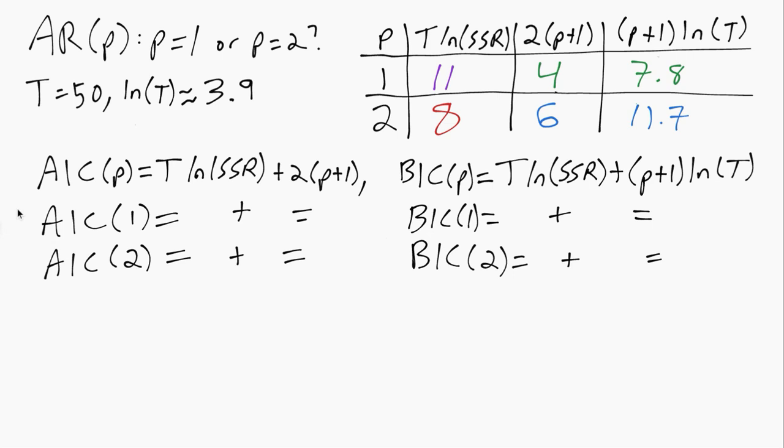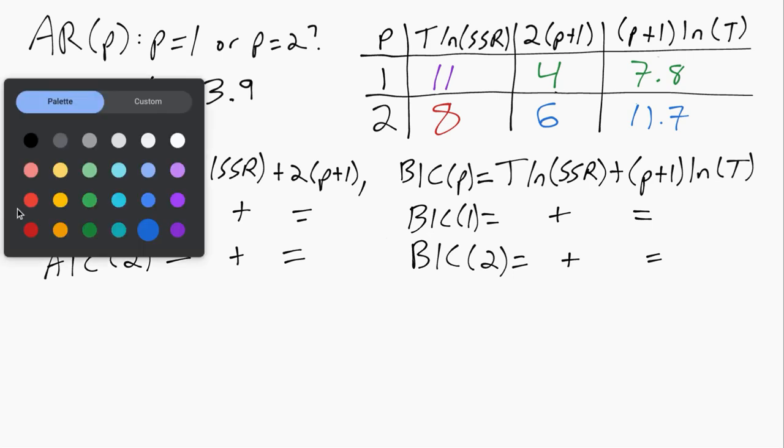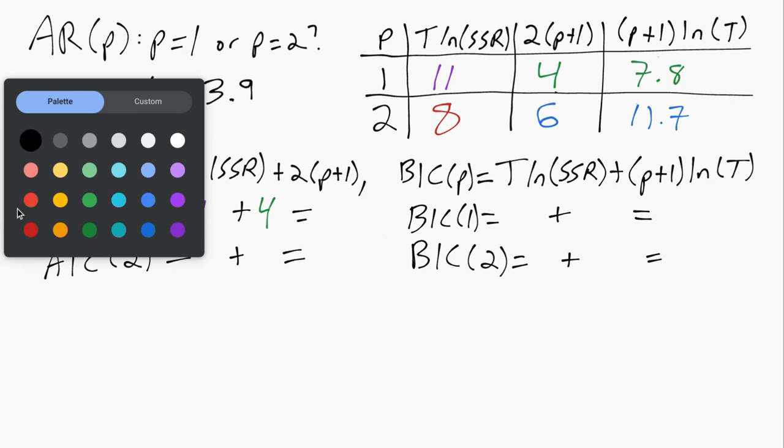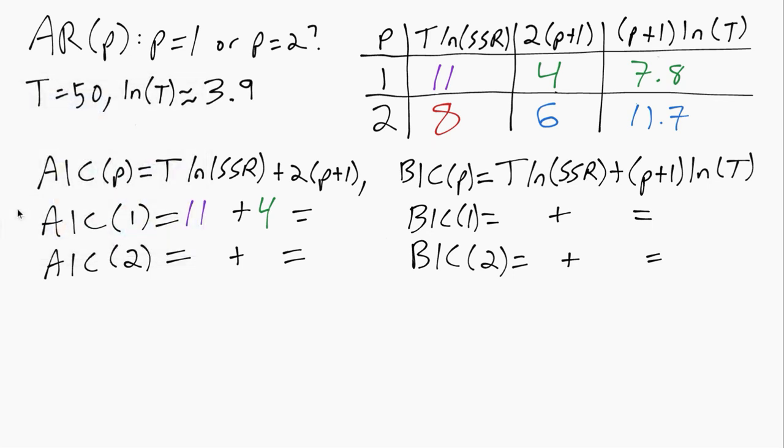So we can fill out the formulas now in the bottom part using those numbers in the table. So we'll look at the AIC first. We can see the purple 11 goes in there, and then the penalty with P equals 1 is that 4, and then we add that up. 11 plus 4 is 15 total.